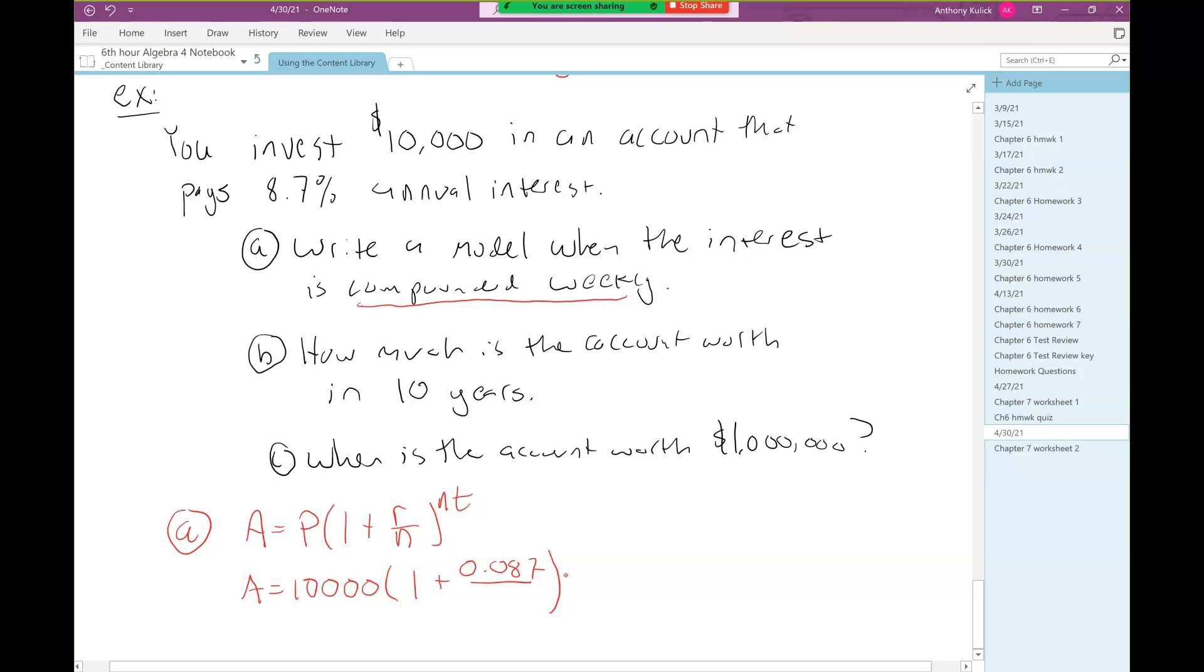N is the number of compounds per year. This problem says it's compounded weekly. So how many weeks are in a year? 52. If it had said compounded monthly, what would that be? 12. If it was compounded daily? 365. Sometimes it's 366, once every four years on leap year. 2024 is the next leap year.